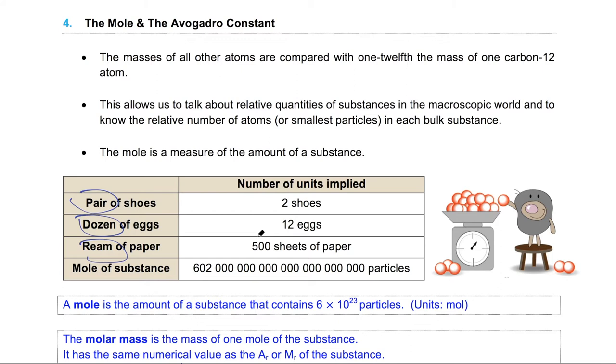So we need a far bigger unit and this is where the mole comes in. A mole of a substance refers to 6 times 10 to the power of 23 particles. One mole of any molecule, atom, or ion would mean there are 6 times 10 to the power of 23 of these particles in there. Now you can see that the mole of a substance is an extremely huge number.